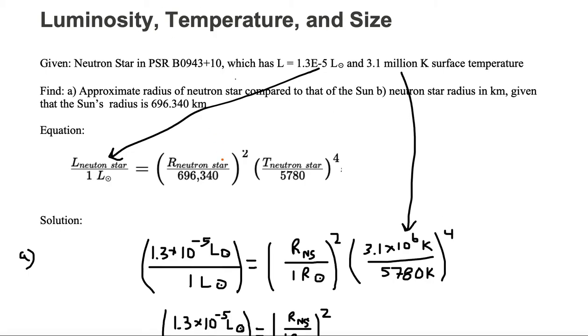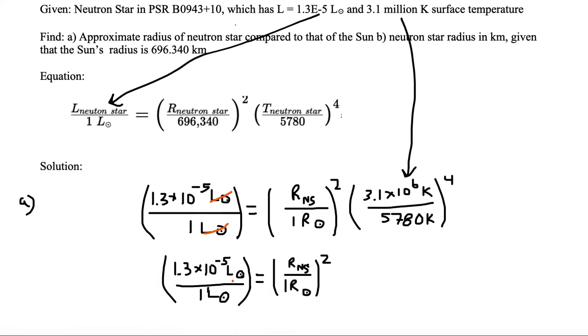Now we can get rid of like variables. We can cancel the solar luminosity from both the numerator and denominator, and we can also cancel the Kelvin units.